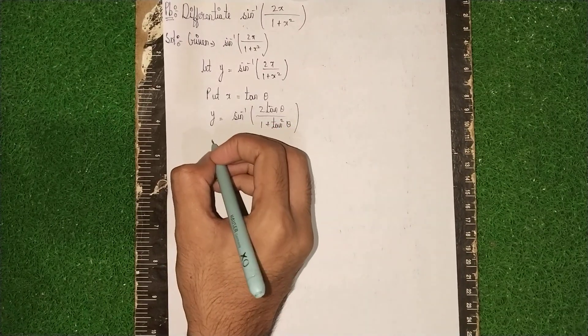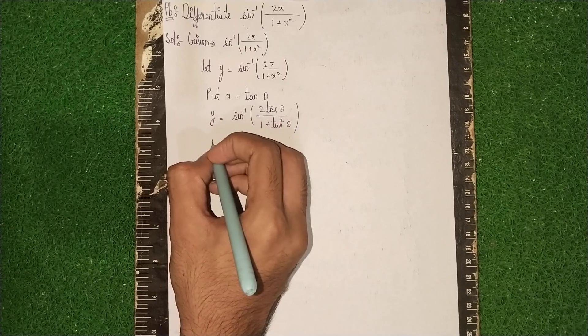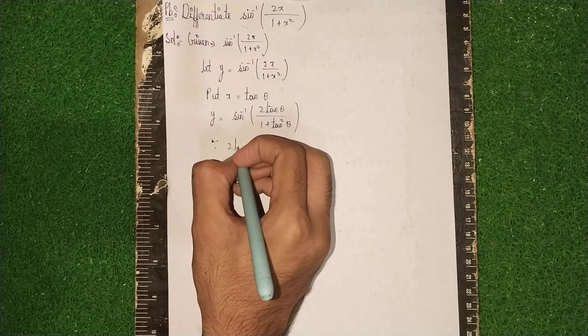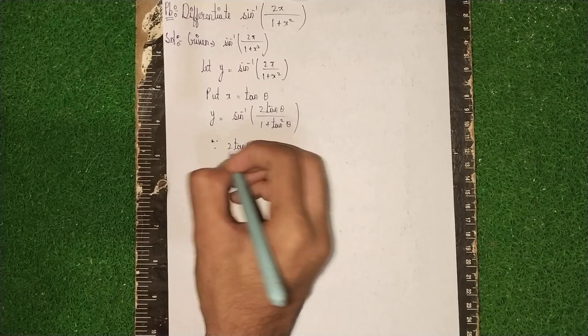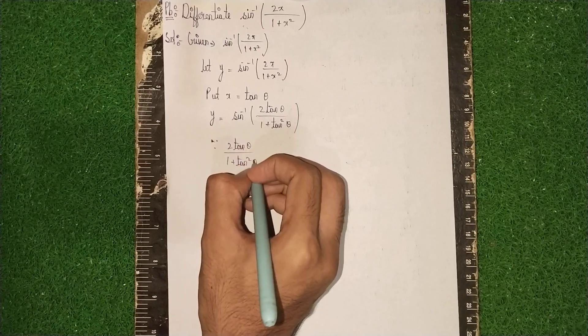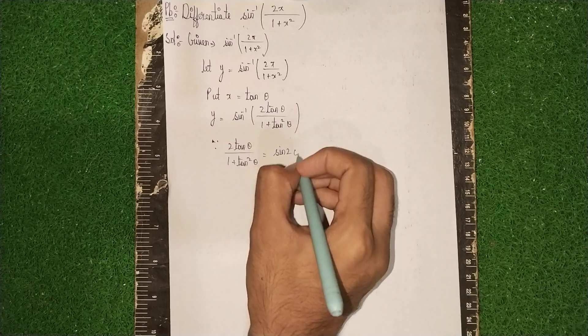Now we know that 2tan θ/(1+tan²θ) = sin 2θ by trigonometric identity.